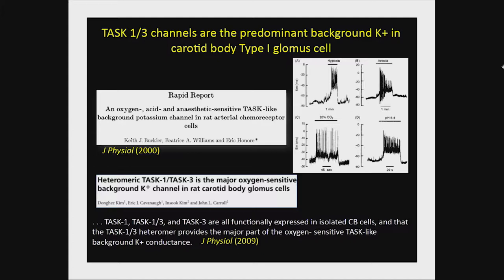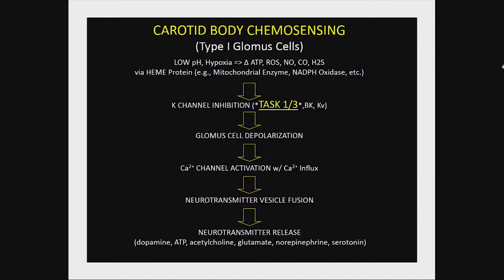Donghee Kim at the Medical College of Chicago used single-channel analysis to show that TASK1, TASK3, and the TASK1-3 heterodimer are the predominant hypoxia-sensitive channels in the carotid body cells. The way the carotid body senses hypoxia and acidic pH is inhibition of potassium channels — very likely tandem-pore TASK1 and TASK3 channels, but possibly also BK or voltage-dependent channels. How hypoxia translates into potassium channel inhibition is still not entirely clear, but it ultimately leads to depolarization, calcium influx, and neurotransmitter release.